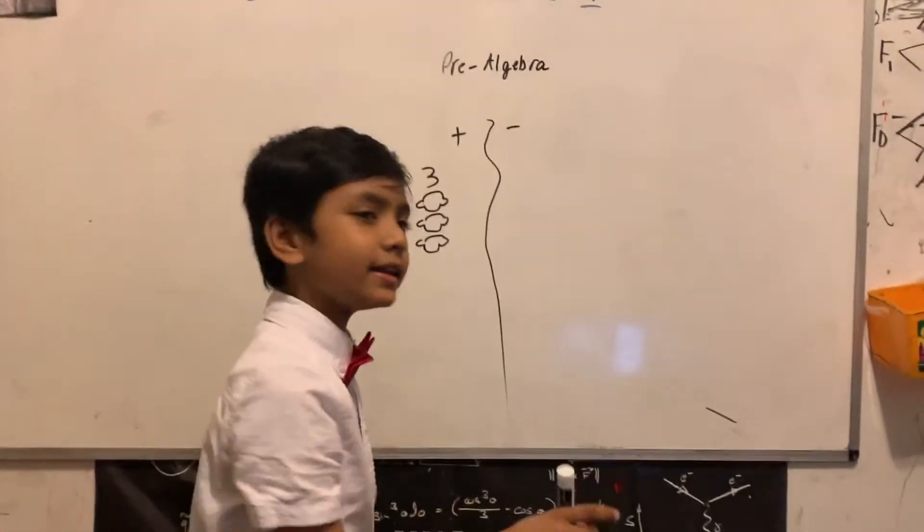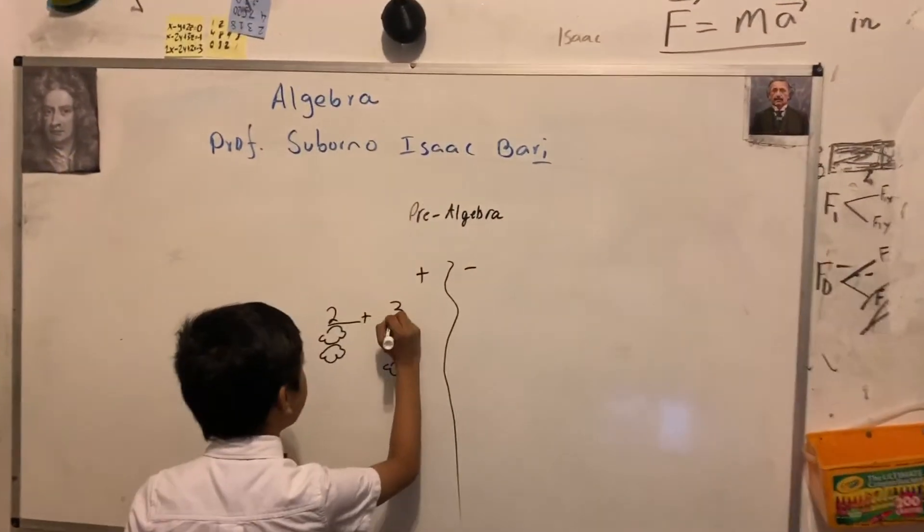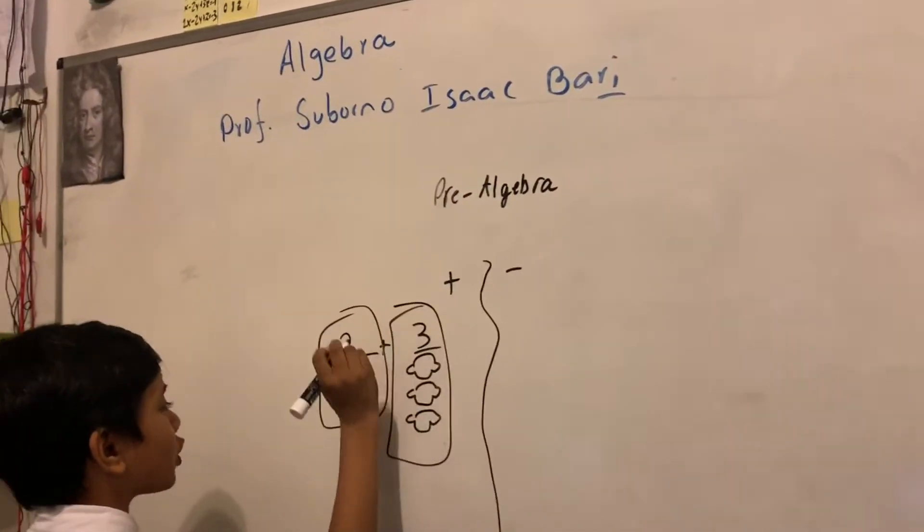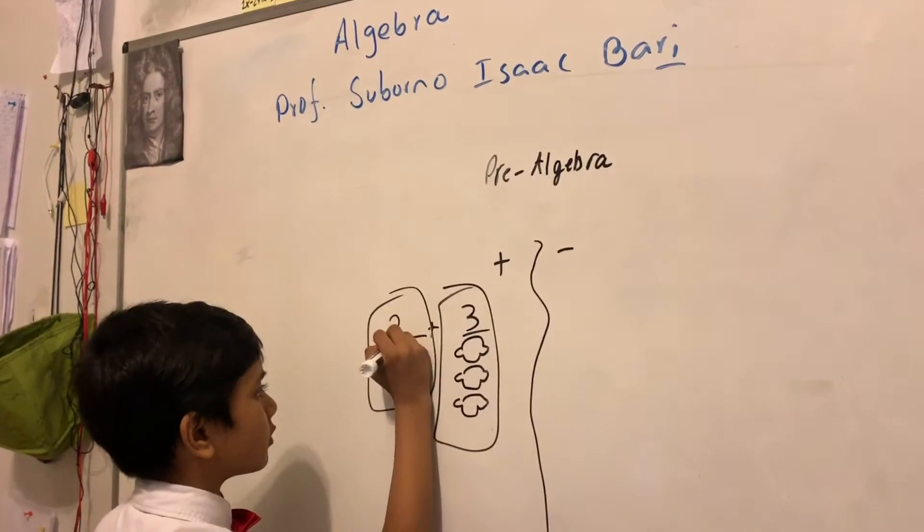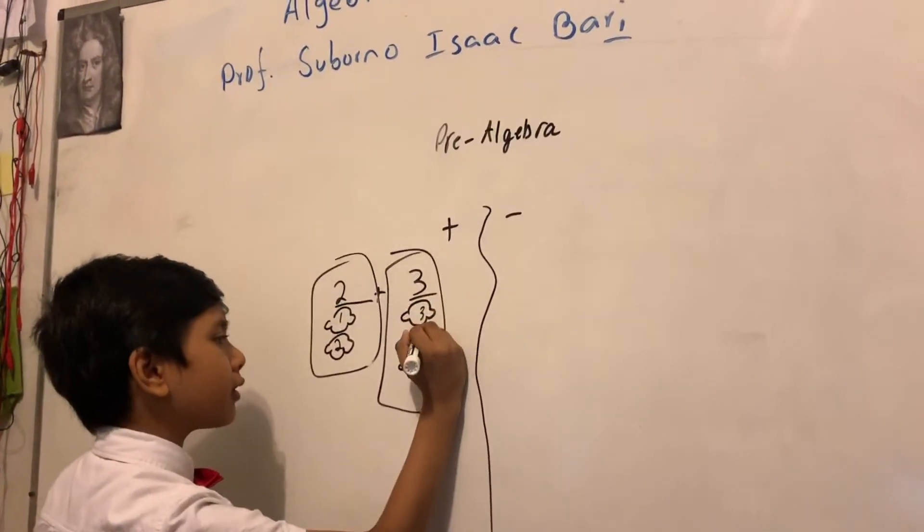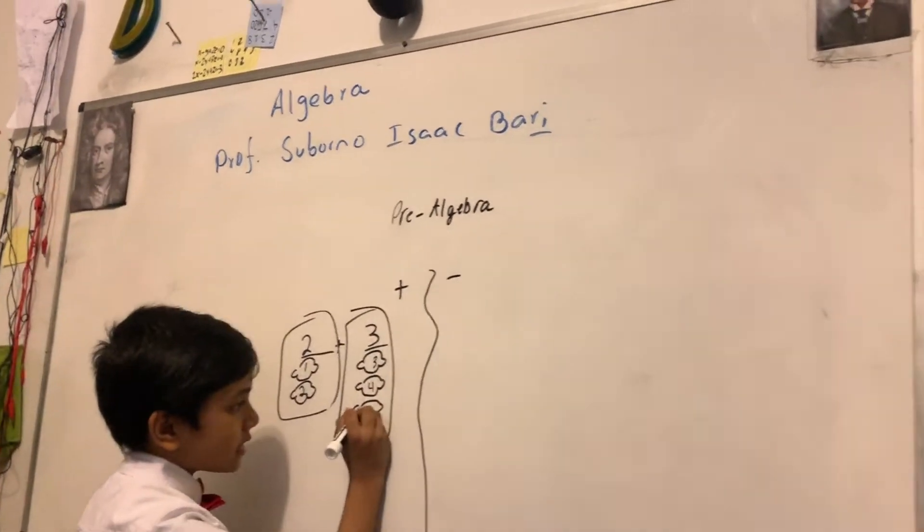Now, addition is the act of combining these two groups, these two lemons together, and then counting the result, the final group, which is one, two, three, four, five.